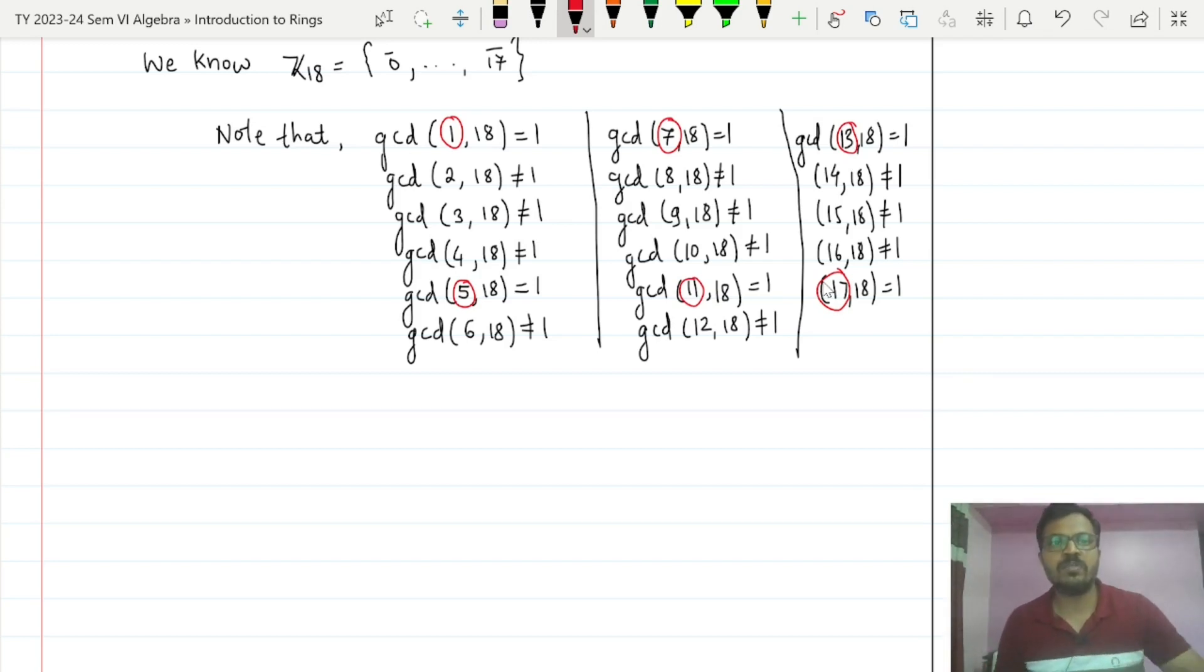So the corresponding elements of Z18 will be units. What is the element corresponding to 1 of Z18? That is 1 bar. Similarly, corresponding to 5, 5 bar then 7 bar, 11 bar, 13 bar and 17 bar. So these elements are units of Z18 and all the rest elements will be zero divisors, and this comes from the theorem that we have seen before.